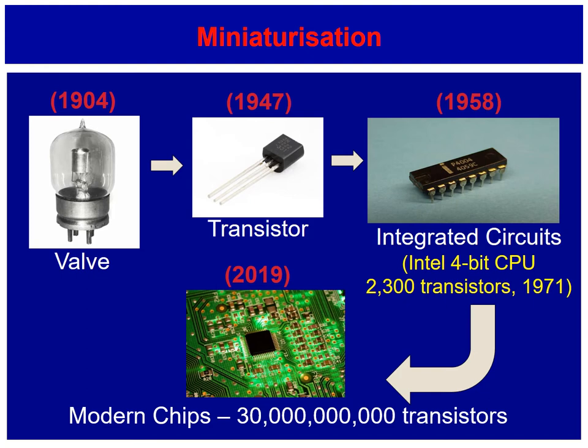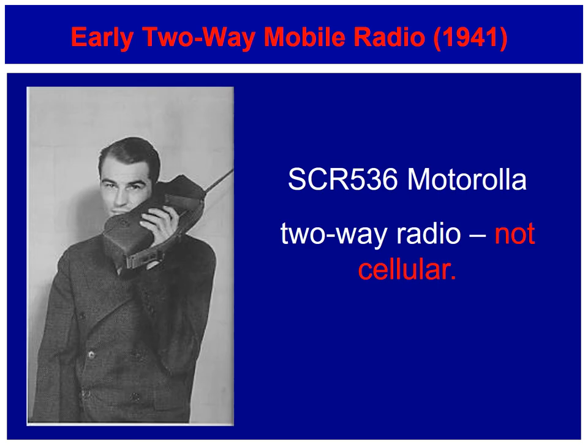It's this miniaturization that gives you the power in your cellular phone, which of course is not a phone — it's a computer in your pocket. With the development of electronics, we were able to have two-way mobile radio. Here's an example of one sold to civilians, but this is not cellular. It's also extremely bulky and the batteries won't last very long.